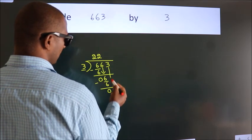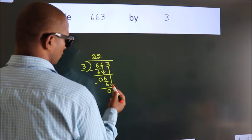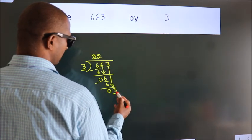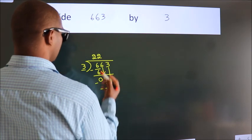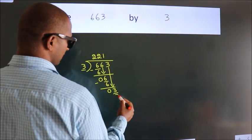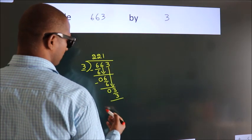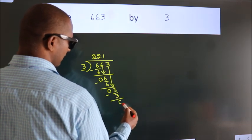After this, bring down the beside number. So 3 down. So 3. When do we get 3? In the 3 table. 3 times 1 is 3. Now we subtract. We get 0.